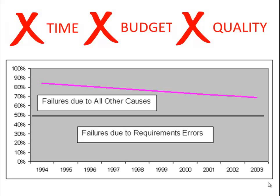Let's pause and think about what this means. If you are currently involved in a software project, it means there is a 70% chance that your project will be late, over budget, or not delivered to the expected quality. If we think in terms of the amount of money spent each year on all software development across the world, that adds up to several millions, sometimes billions, spent on failure.